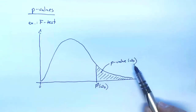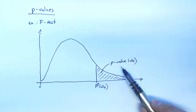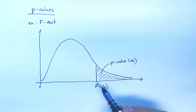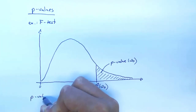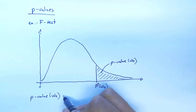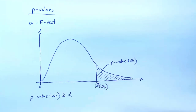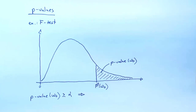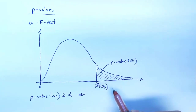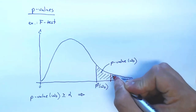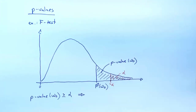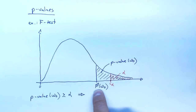By looking at the p-value you can determine whether the test rejects. Suppose the p-value is larger than alpha. Alpha is the probability that lies to the right of the critical value. If alpha is smaller than the p-value, that means the critical value is to the right of the test statistic.